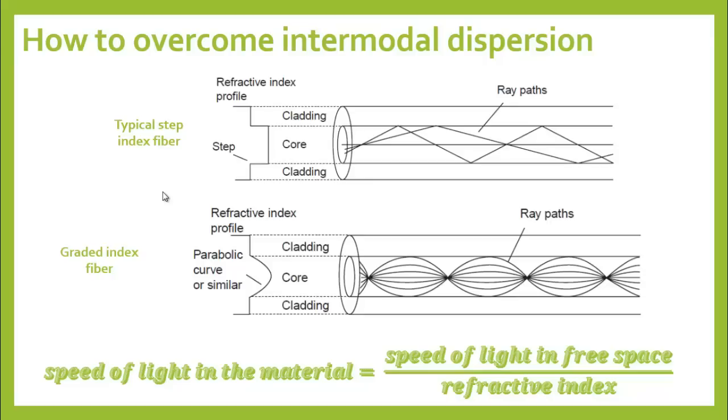Simple, at least in theory. The speed of light in the core is determined by the refractive index. The solution to our problem is to change the refractive index progressively from the center of the core to the outside.